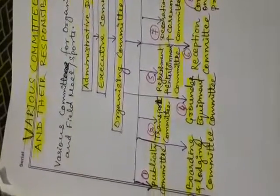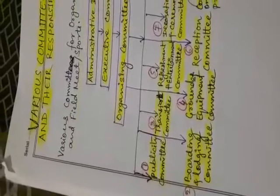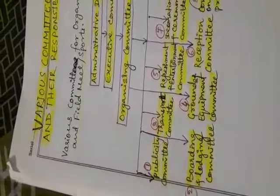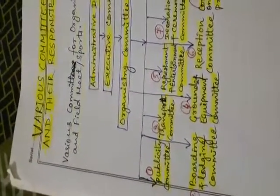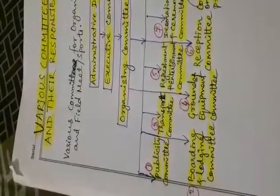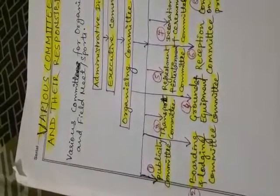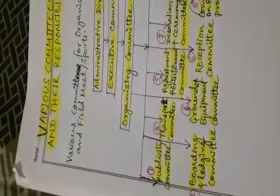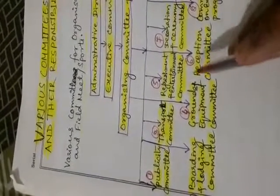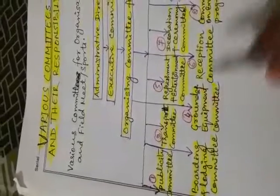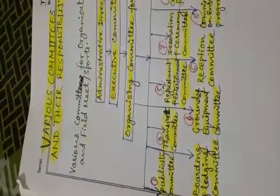Then comes the ground equipment committee. This committee is responsible for making the grounds or laying out the track and field. This committee also makes necessary arrangement of equipment related to the games and athletic meet, and is also responsible for providing equipment according to specification.